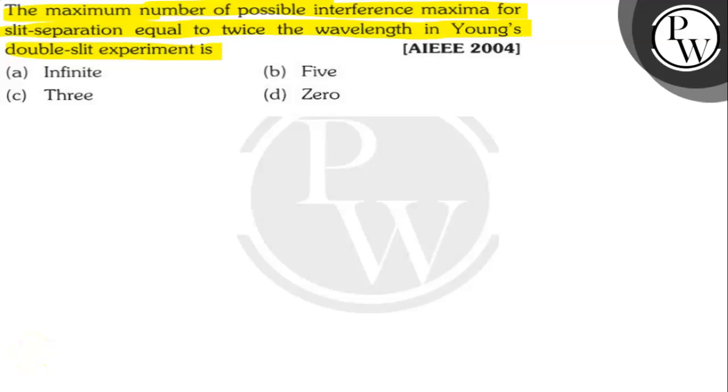Let's find out. So the condition for maxima in Young's double slit experiment is dsinθ is equal to nλ, where d is the separation between the slits and λ is the wavelength of light used.